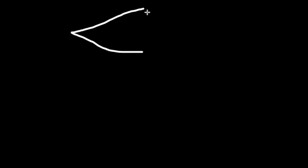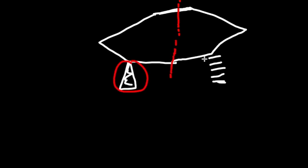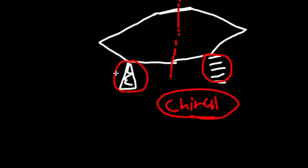We have the same molecule, but this time we have a wedge and a dash. We draw the internal line of symmetry and this time we have a wedge and a dash — which are different. That means it is chiral, because one is in front and one is in back. And just like the last molecule, it will have two chiral centers.